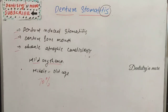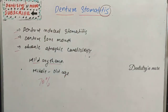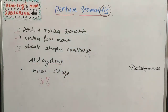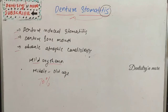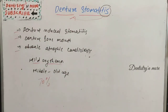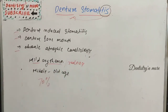Welcome back to another session in dentistry and more. Today's topic in prosthodontics is denture stomatitis — a very simple topic. The name itself gives the idea: a denture causing inflammation in the oral cavity. It has several names such as denture-induced stomatitis, denture sore mouth, and chronic atrophic candidiasis. It commonly appears as mild erythema or redness.